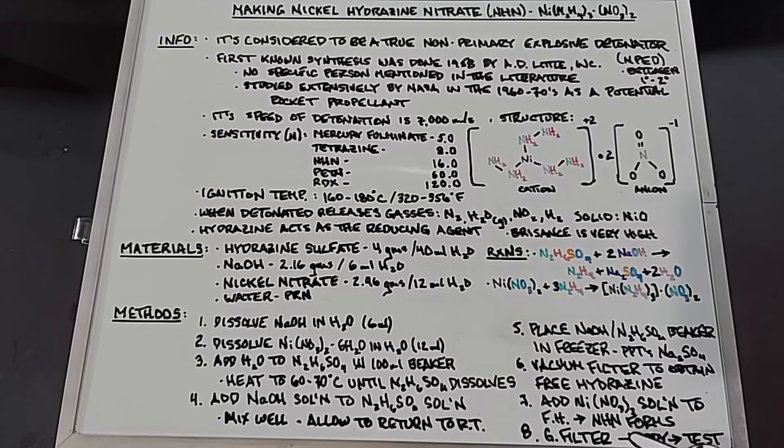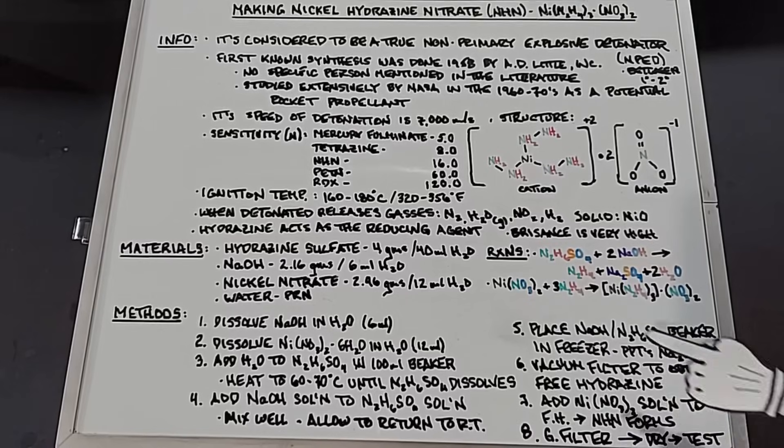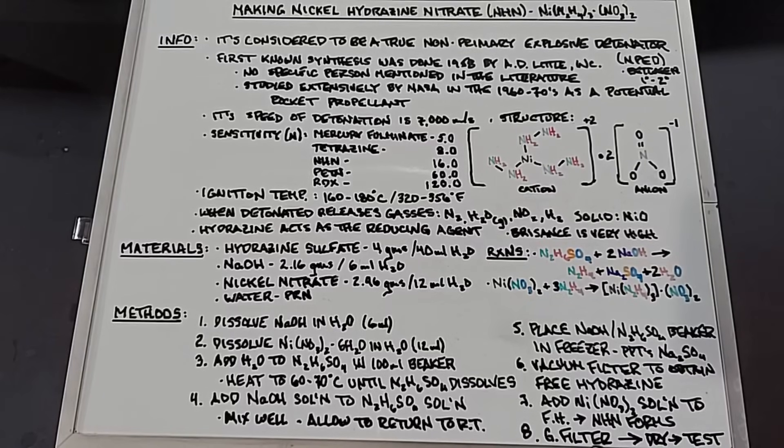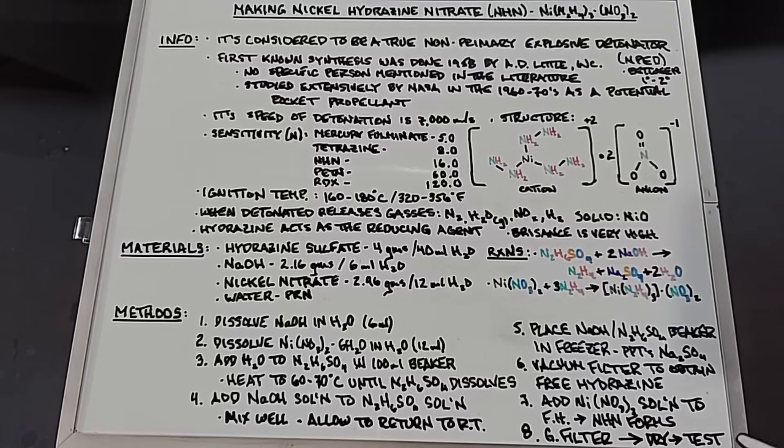To this free hydrazine solution, you then add the nickel nitrate solution you already made, and the NHN will form right then and there. Usually it's a pink to purple color, and you want to continue mixing this for several minutes at least to make sure all of the nickel nitrate and the free hydrazine get a chance to mix into NHN. And lastly, you can then gravity filter this—you don't want to vacuum filter it—dry it up, and finally the fun part: test it.